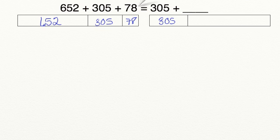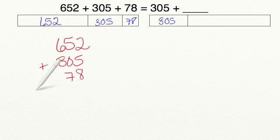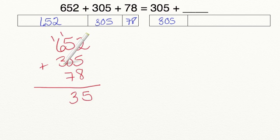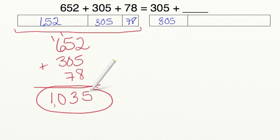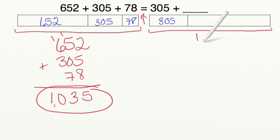So now what we're going to do, we're going to add up these numbers on the left-hand side to find out the value of this entire block. 652 plus 305 plus 78. 5 plus 2 equals 7 plus 8 equals 15. 5 plus 1 equals 6 plus 7 equals 13. 6 plus 3 equals 9 plus 1 equals 10. So on the left-hand side, this entire block has a value of 1035. Now, if this block is equal to this one, because we have an equal sign, that means that this entire block also has a full value of 1035.